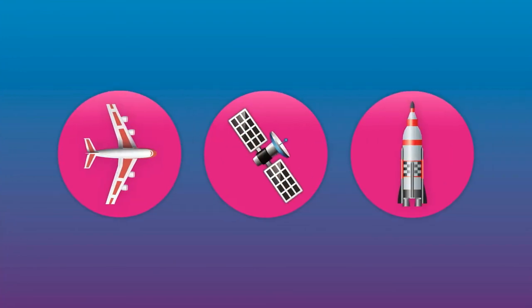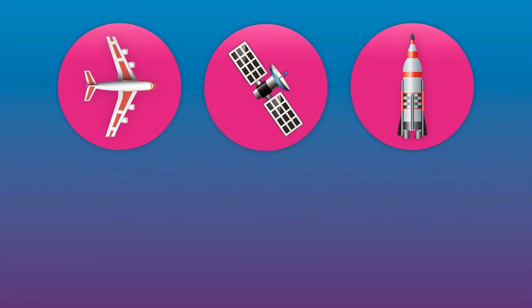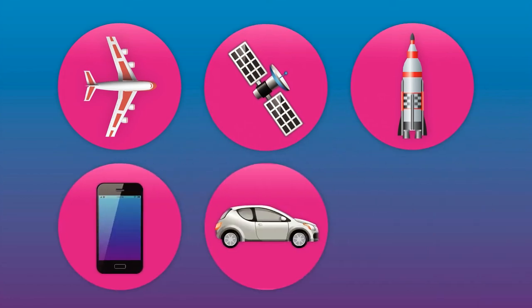Above us, space weather can affect aircraft, satellites, and spacecraft. Down here on Earth, it can disrupt communications, transportation, and energy.